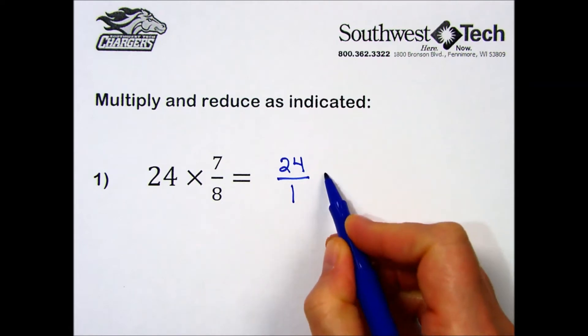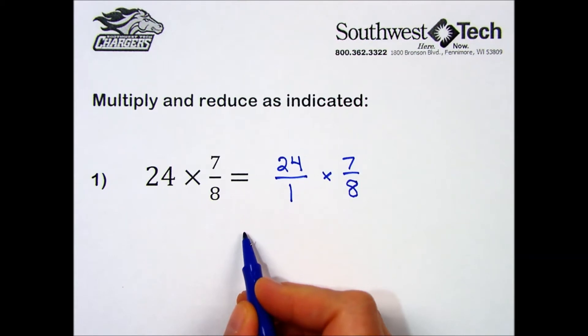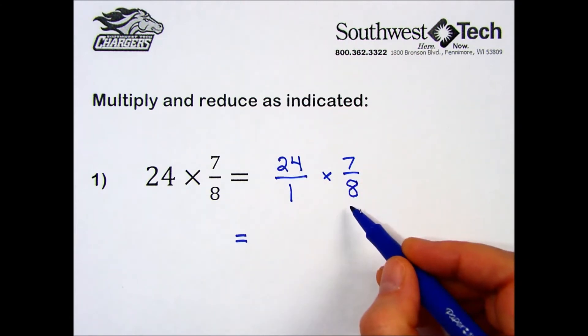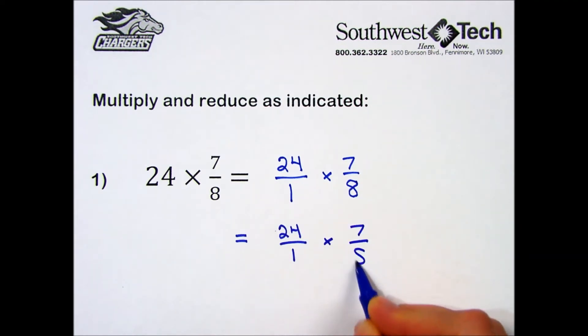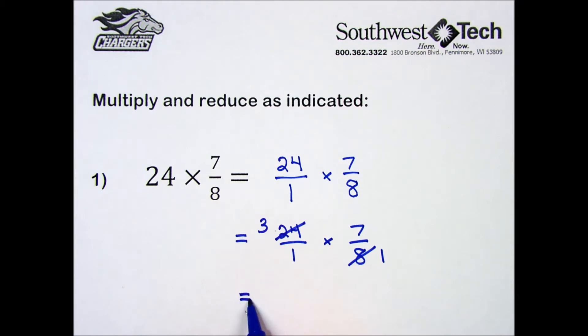Times my 7/8ths. I'm going to use the cancellation technique to keep my numbers from getting too big. I notice on this diagonal both numbers are divisible by 8: 8 divided by 8 is 1, 24 divided by 8 is 3. Then I perform the multiplication on the fractions that remain: top times top, 3 times 7; bottom times bottom, 1 times 1.